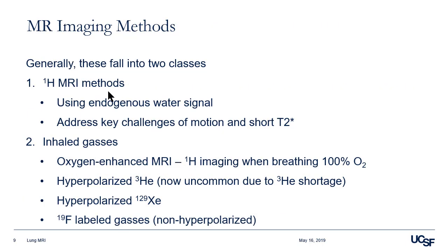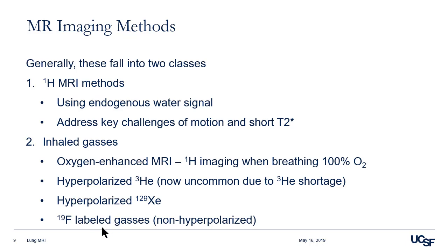I'm going to divide these into two classes of imaging methods. I'll start off talking about proton-based imaging methods, then move on to inhaled gas methods. The proton methods face the challenges of motion and short T2*. For inhaled gases we have: oxygen-enhanced MRI where subjects breathe 100% oxygen, hyperpolarized helium gases — now uncommon — hyperpolarized xenon, which is gaining momentum, and inert fluorinated gases, which are not hyperpolarized.